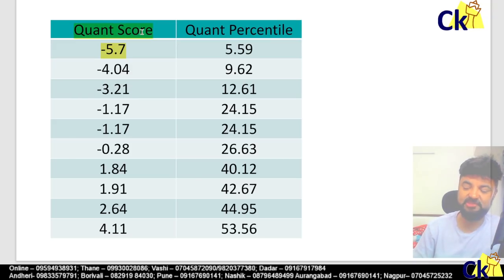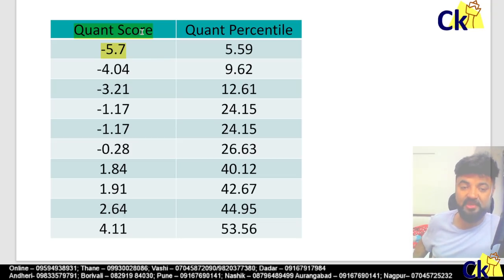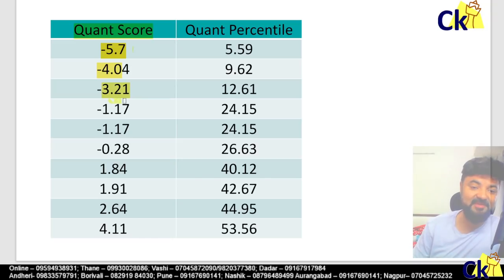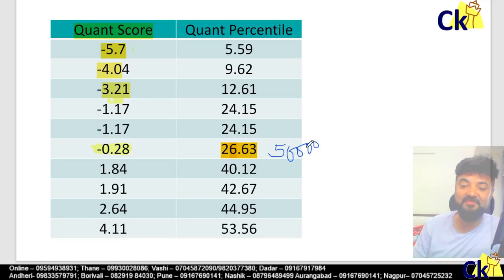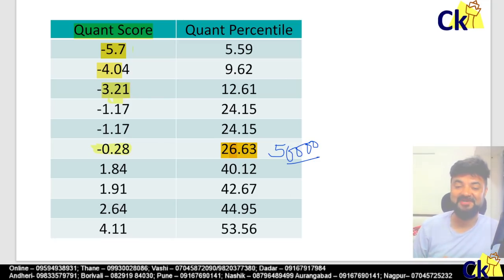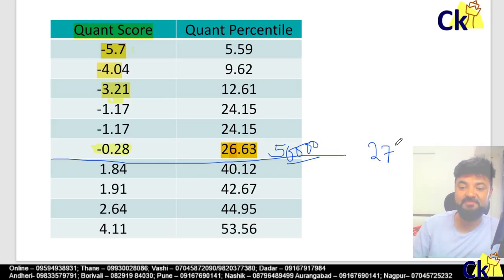Starting with the quant section — quant, verbal, DI logic, and overall — 4 percentiles we will check today. If I score 0, or if I leave the paper blank, because maximum people look here are in minus: minus 4, minus 3, minus 2. So 0.28 is 26 percentile. This means the CAT paper is so difficult that almost 50,000 people have scored negative marks. So if you leave the paper blank, you will get almost 27 percentile in the quant section.